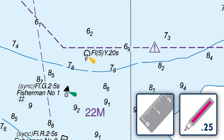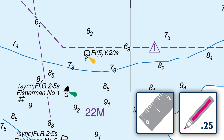Using a magenta .25 pen and a ruler, delete the description using a double strikethrough over the description text.